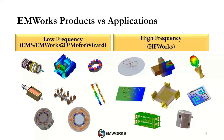Let us do a quick recap on EMWorks products and their related applications. We can divide EMWorks offerings into two categories: low frequency and high frequency simulation. Within the low frequency category, we offer three products — EMS 3D, EMWorks 2D, and Motor Wizard — which can be used to design and simulate applications like cables, insulators, bus bars, permanent magnets, solenoids, eddy current braking systems, wireless charging, transformers, and electrical machines. Within the high frequency category, we offer HFWorks, used to design and simulate antennas, waveguides, filters, resonators, connectors, and more.